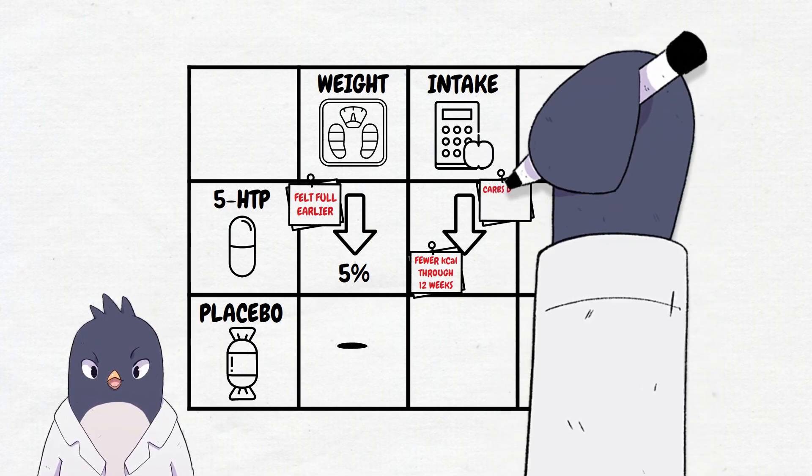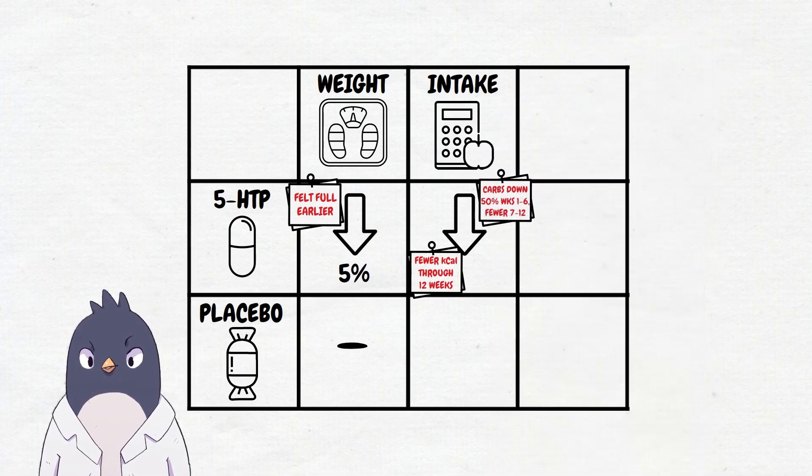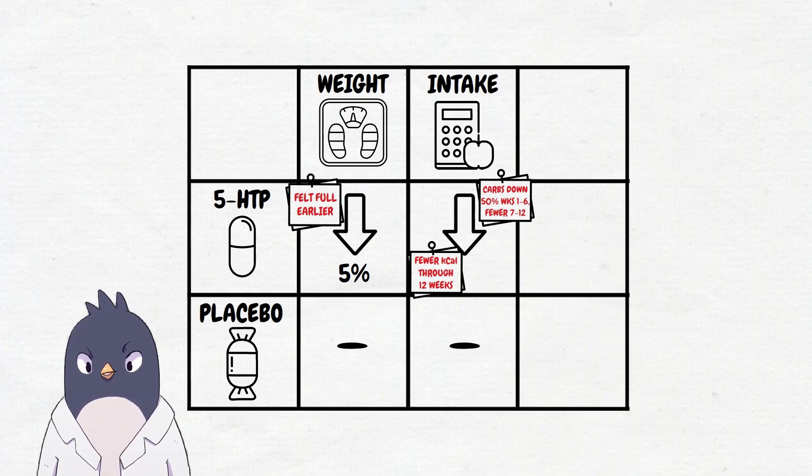In the first six weeks they reduced their carbohydrate intake by 50%, and reduced it even more during the second half of the study. The placebo group didn't have any statistically significant changes in calorie or macronutrient intake.